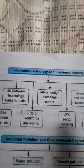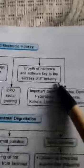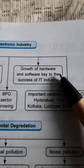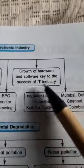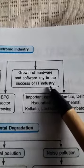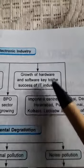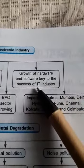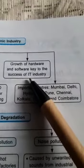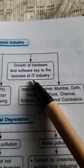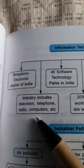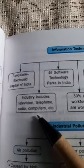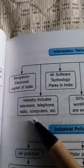If we talk about the growth of hardware and software — these are the key to the success of the IT industry. This industry includes devices like television, telephone, radio, and computers.